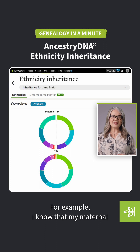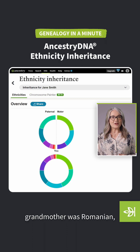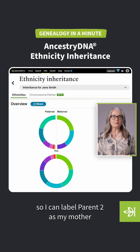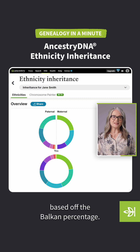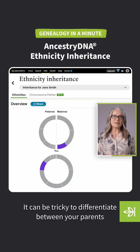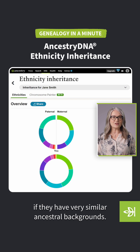For example, I know that my maternal grandmother was Romanian, so I can label parent two as my mother based off the Balkan percentage. It can be tricky to differentiate between your parents if they have very similar ancestral backgrounds.